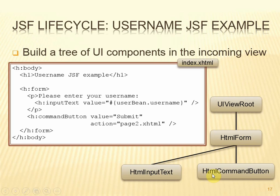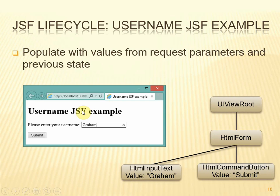That tree now represents the structure of the view, and so we're ready to move on to the next step, which is to populate the tree with values that have come from the request parameters. When this form was submitted, the text box had a value — that value is then copied into this element of the UI component tree. The button also had a value, which is also copied into a component of the tree, so now our view has been captured in the tree with the values provided.